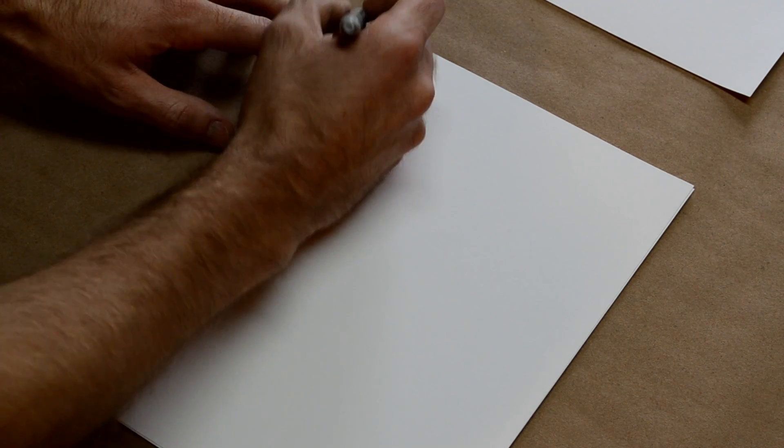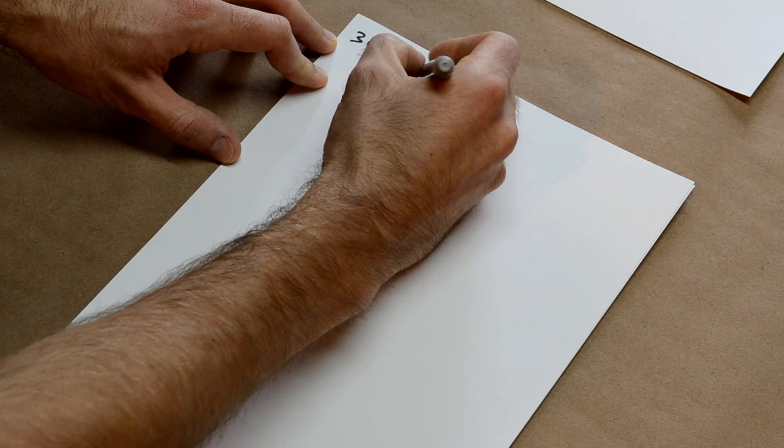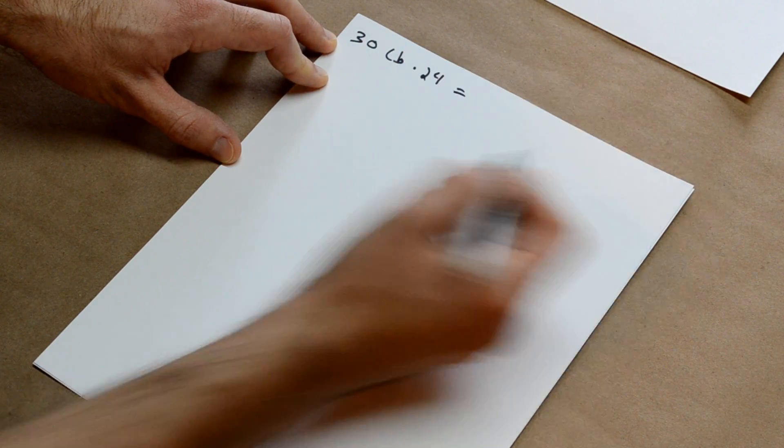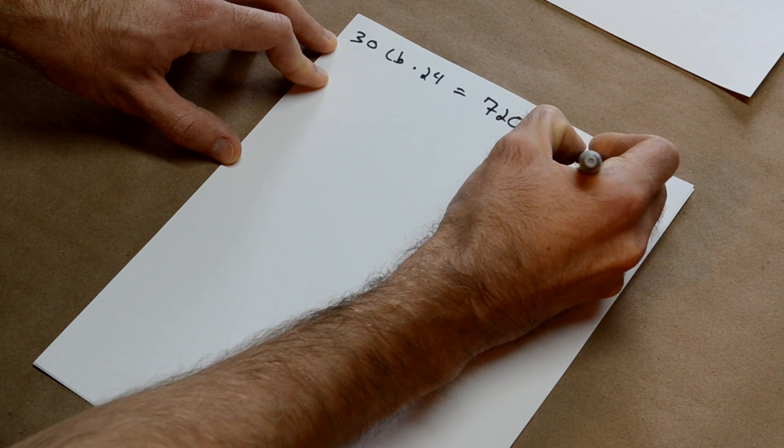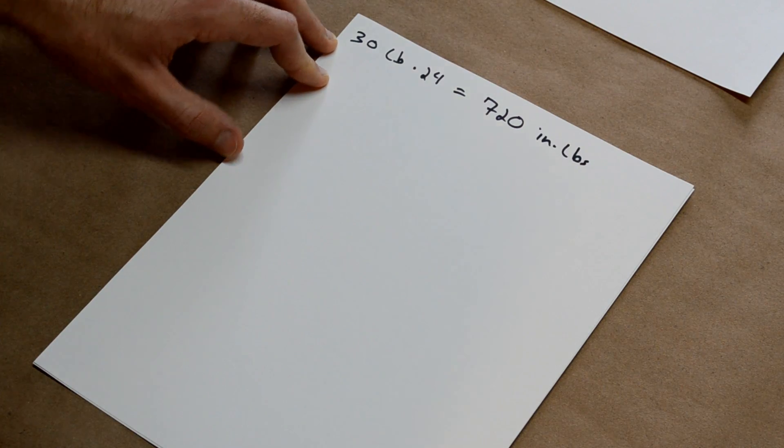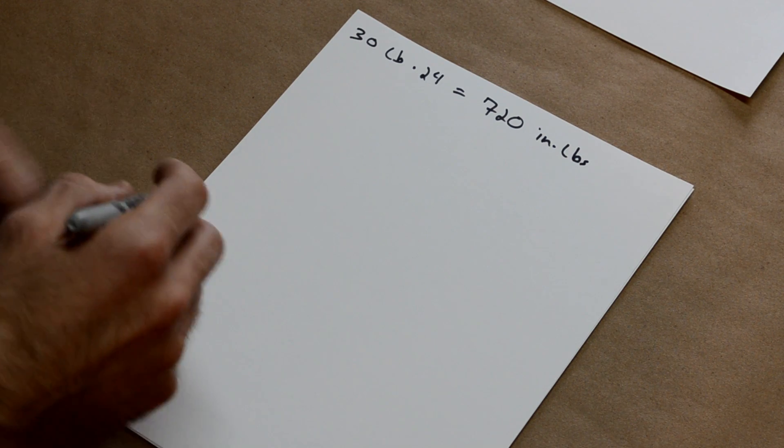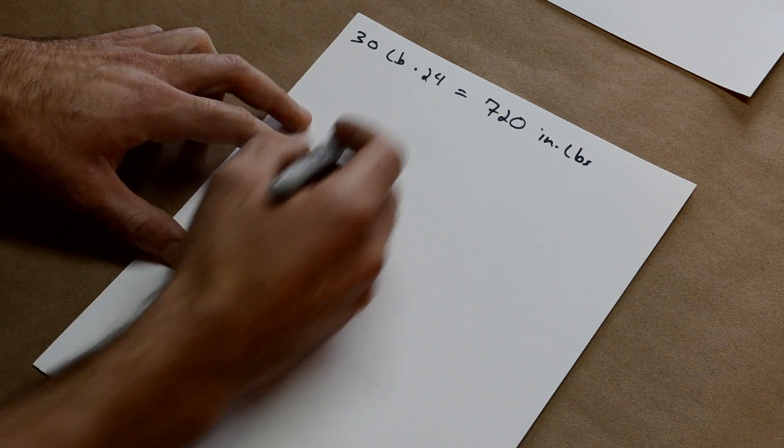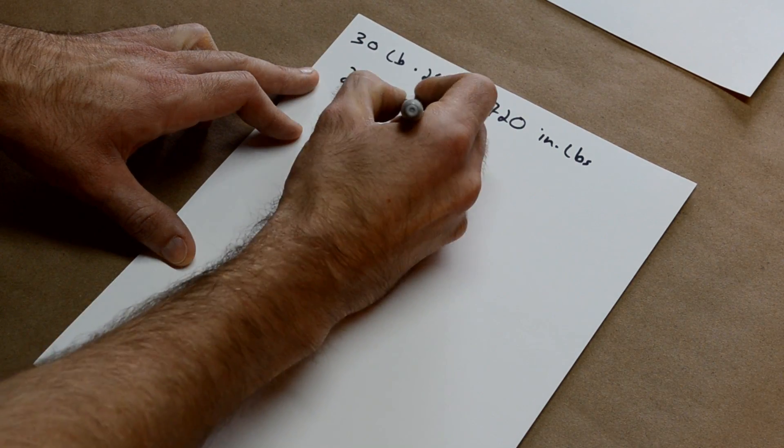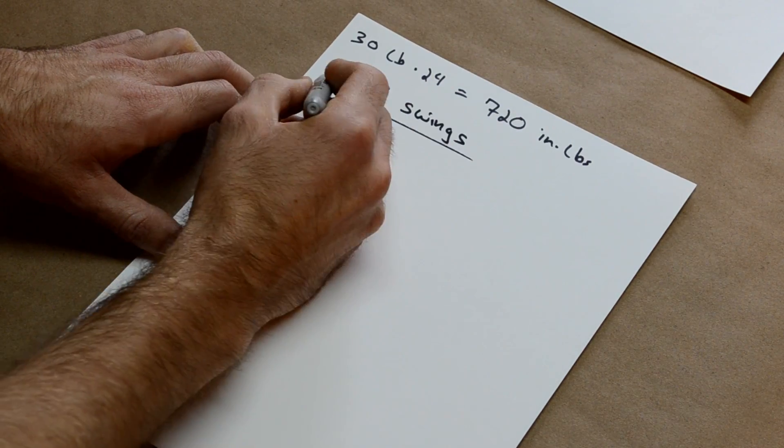Now that we know how much energy it takes, let's come up with a counterweight. So we'll say it's 30 pounds, and we're going to raise it 24 inches to charge it up. That's going to give us 720 inch pounds of energy. Now we're going to take this 720, divide it by 2.9 to come up with swings, and we're going to end up with 248 swings from that counterweight. That's how much we have.